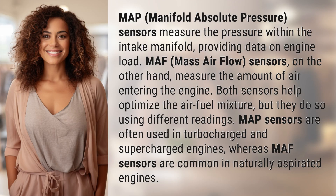MAP, manifold absolute pressure, sensors measure the pressure within the intake manifold, providing data on engine load. MAF, mass airflow, sensors, on the other hand, measure the amount of air entering the engine. Both sensors help optimize the air-fuel mixture, but they do so using different readings.